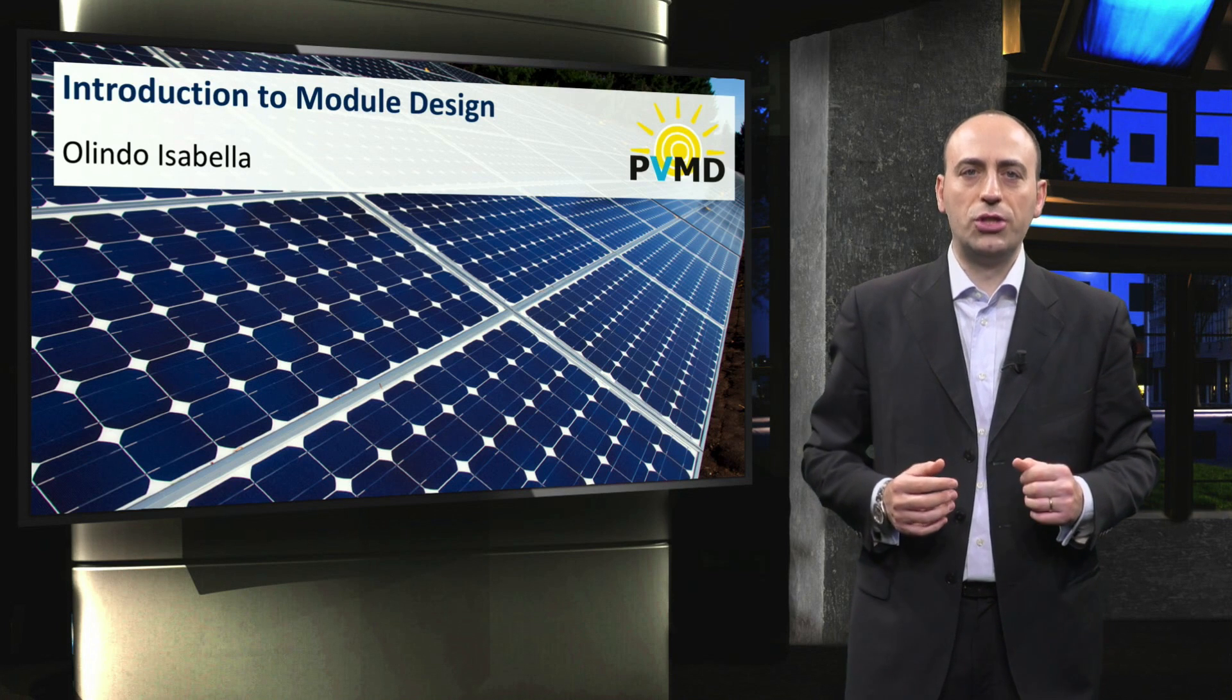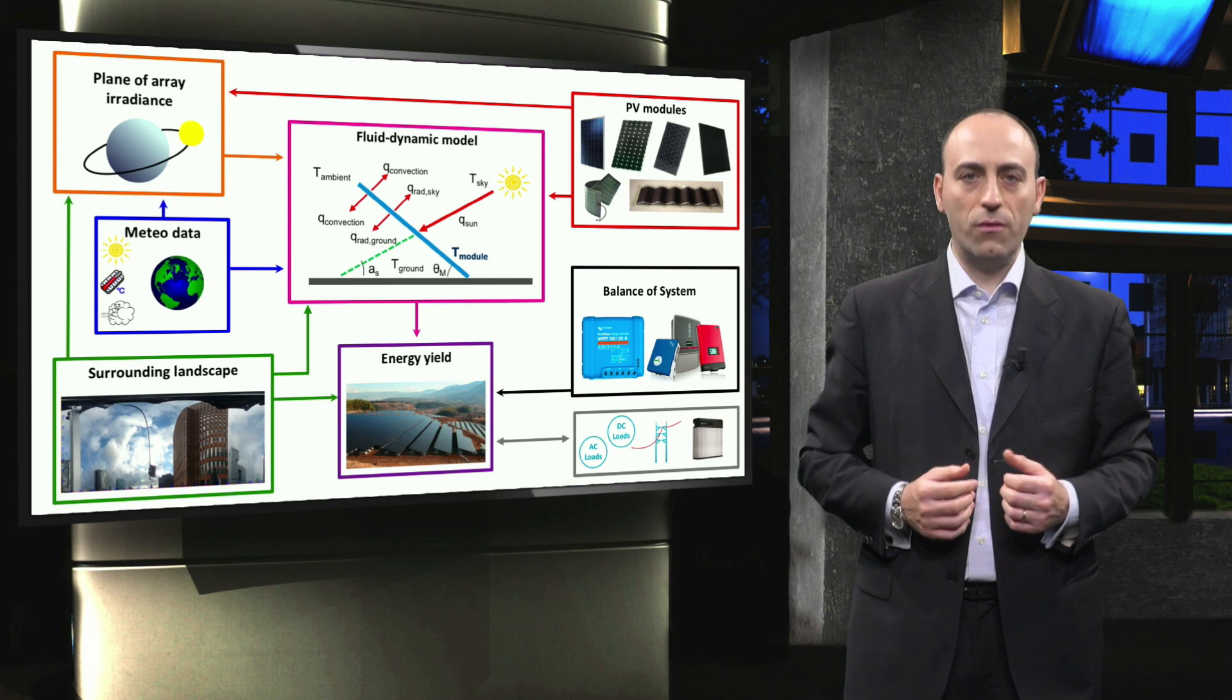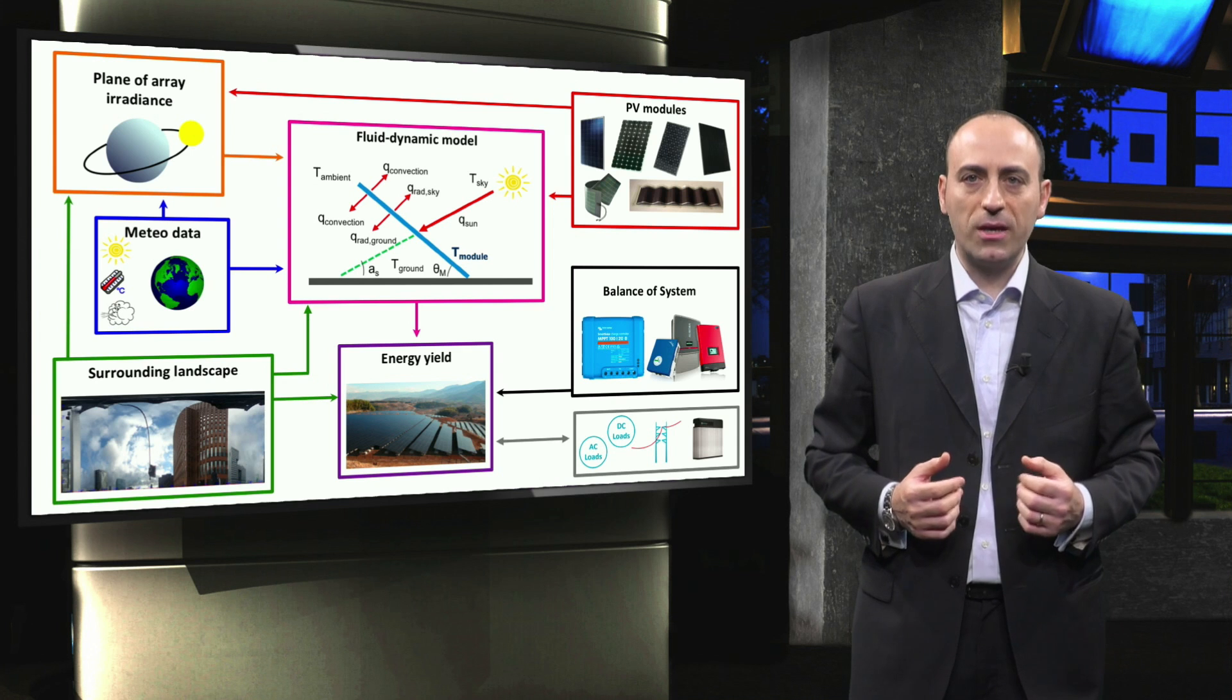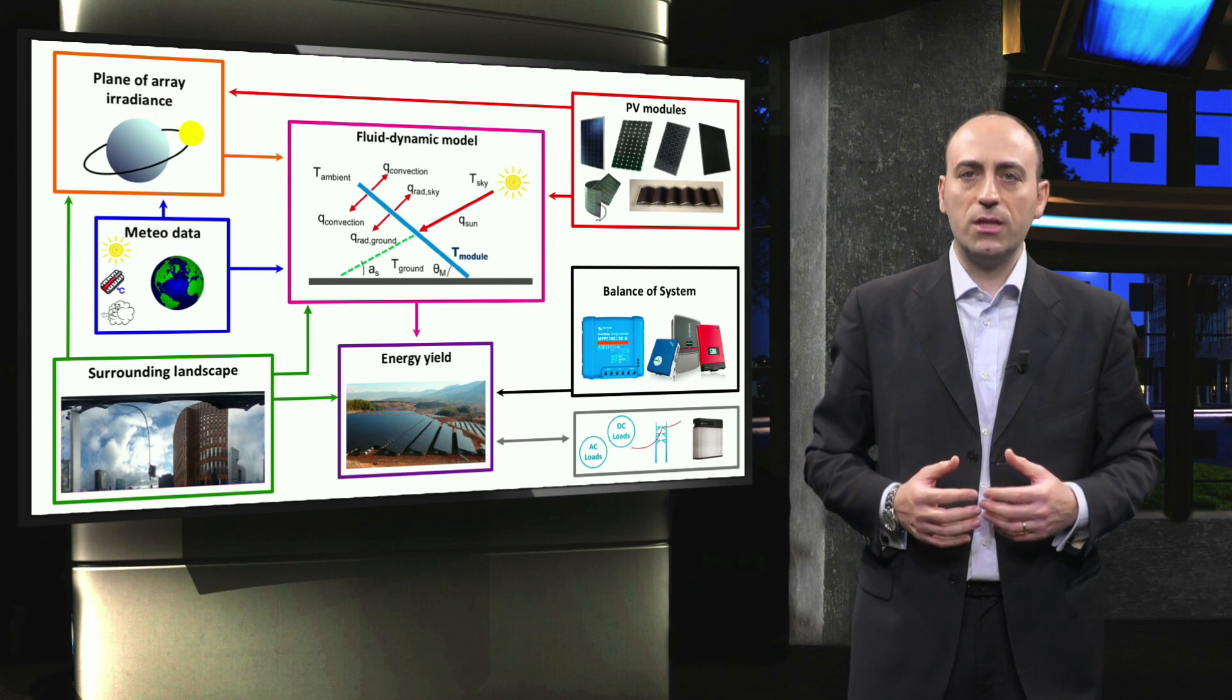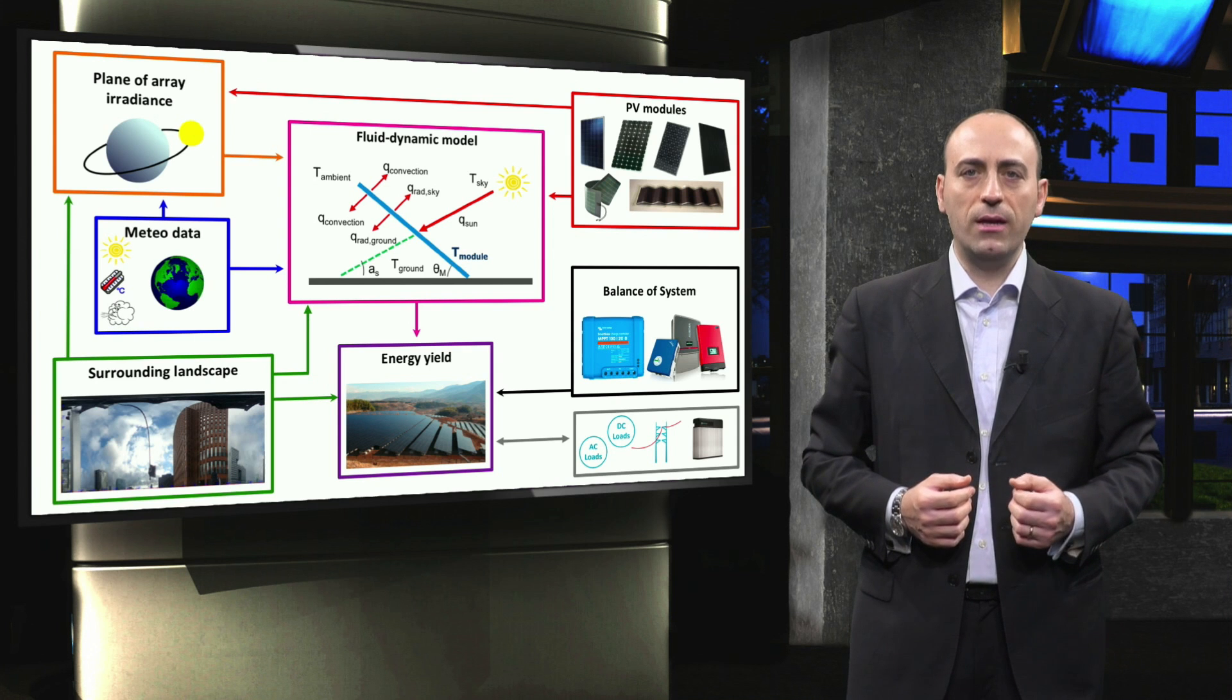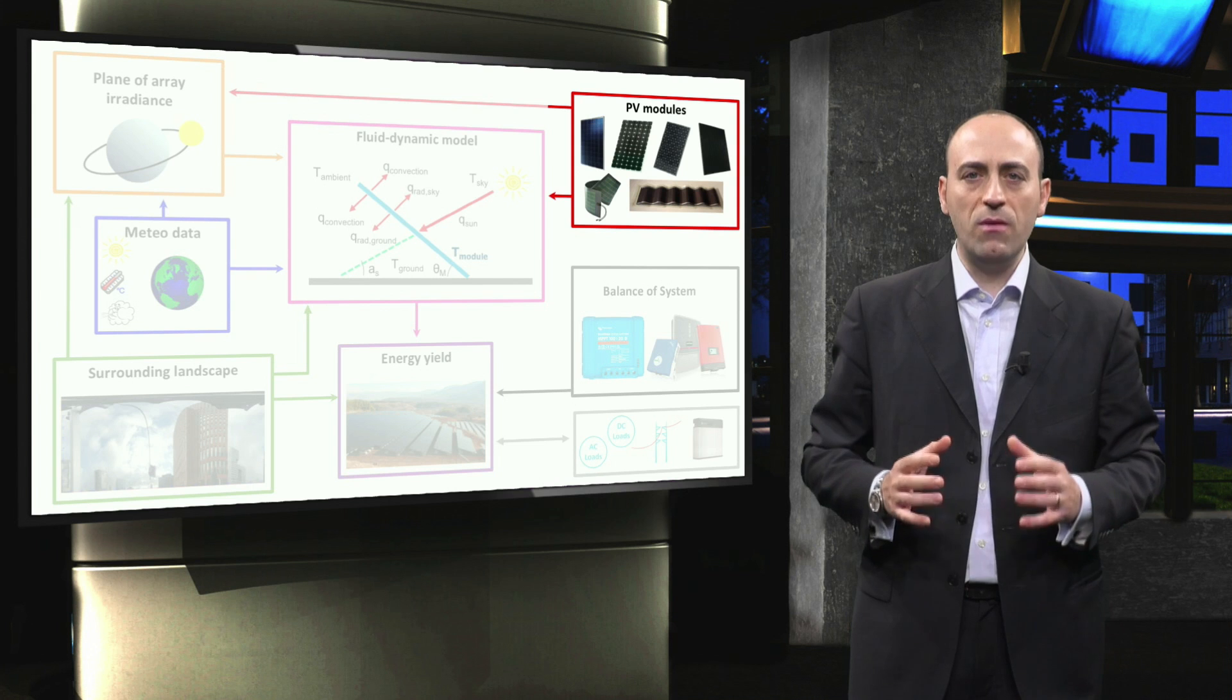Welcome to the first video of the third chapter. Let's again take a look at the PV system design overview. In week 2, you learned about the location-related aspects of PV system design, such as the meteorological data, surrounding landscape, and the plane of array irradiance. In this part of the course, we will focus on the PV modules.